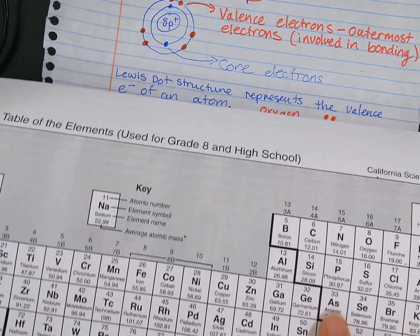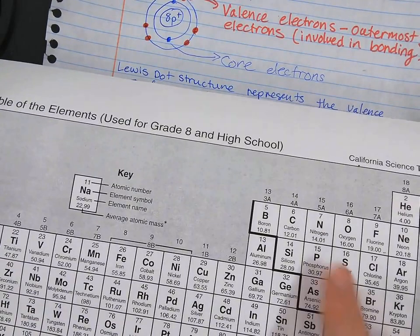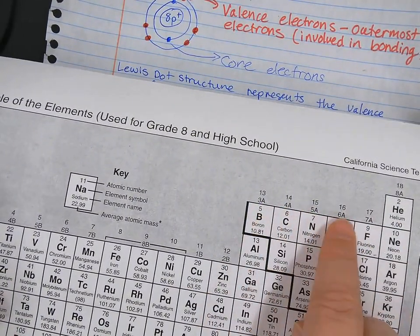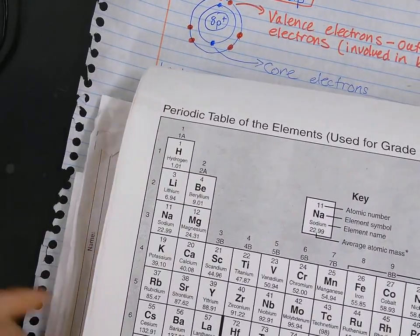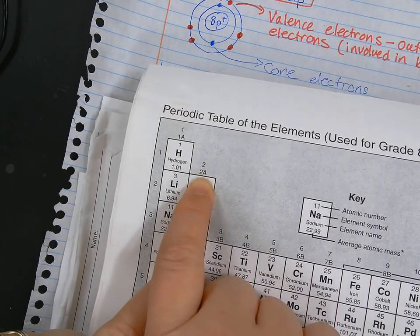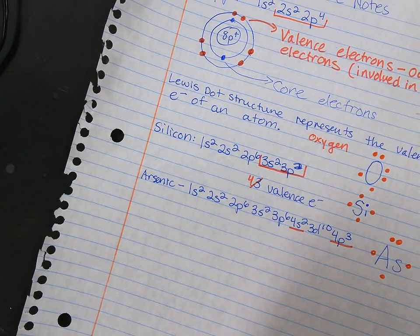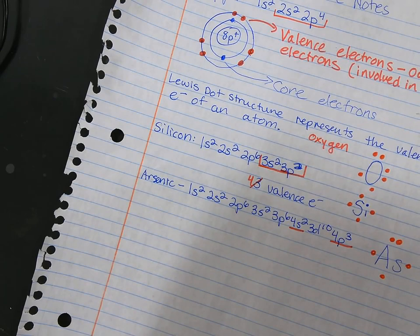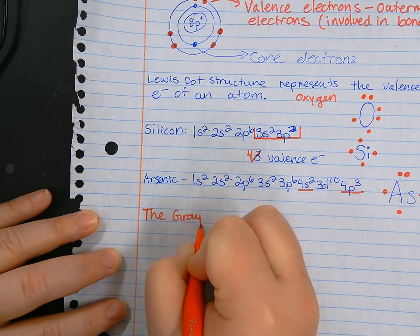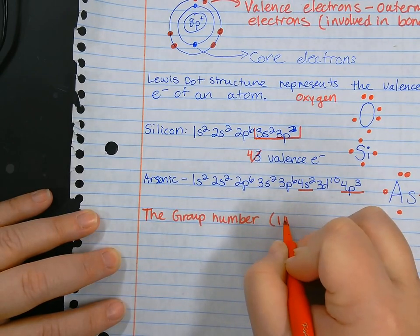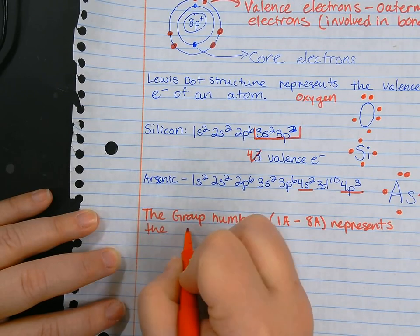The A group, which is the first two columns on the left and then our p orbital columns on the right, those A groups represent our number of valence electrons. So it's a little shortcut. For instance, if I wanted to know the number of valence electrons in calcium, I can just look at the top - it's group 2A, so it's going to have two valence electrons. So the group number, group 1A through 8A, represents the number of valence electrons.